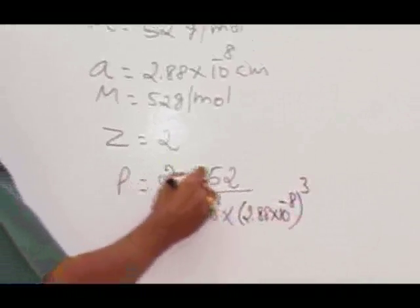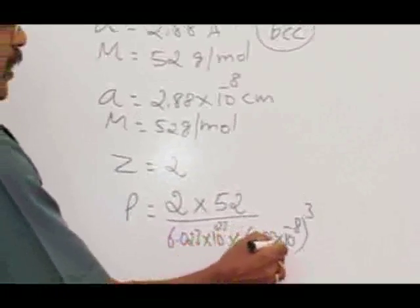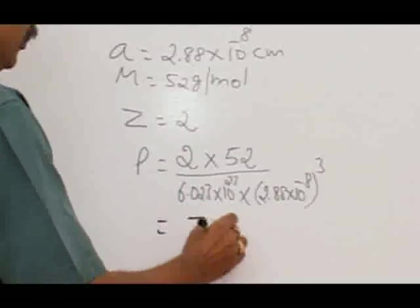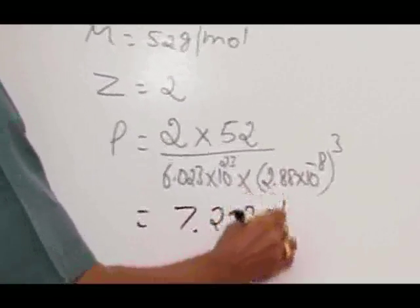This gives us Z times 52, divided by Avogadro's number and the volume. On solving that, we get 7.228 grams per cubic centimeter.